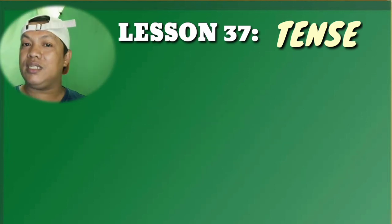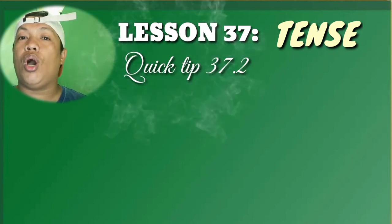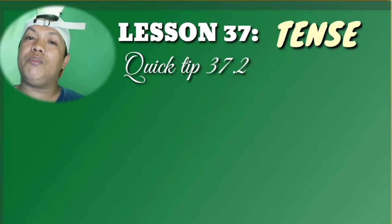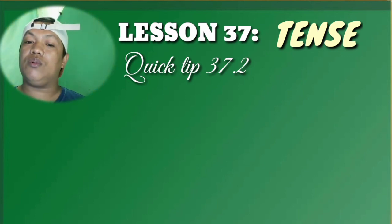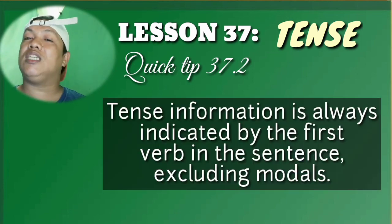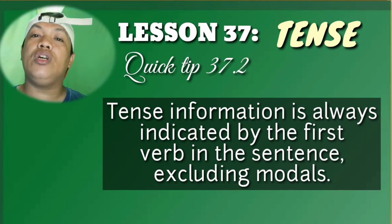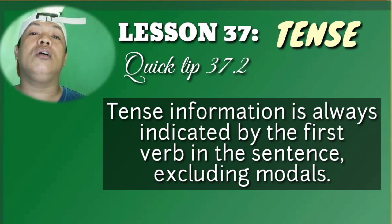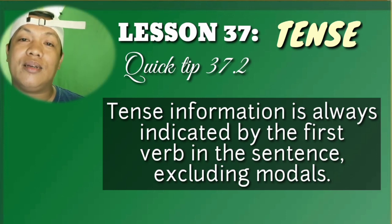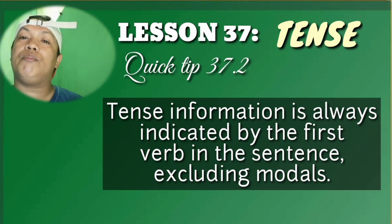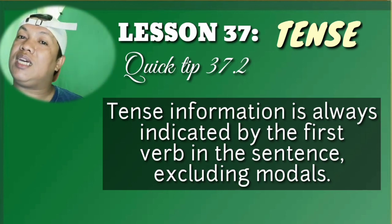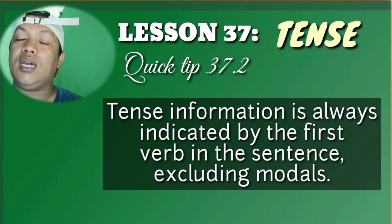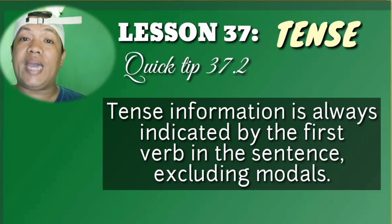The last thing to remember from today's lesson is Quick Tip 37.2. Quick Tip 37.2 in English grammar tells you that tense information is always indicated by the first verb in the sentence, excluding modals. Tense information is always indicated by the first verb in the sentence, excluding the modals embedded in the sentence.